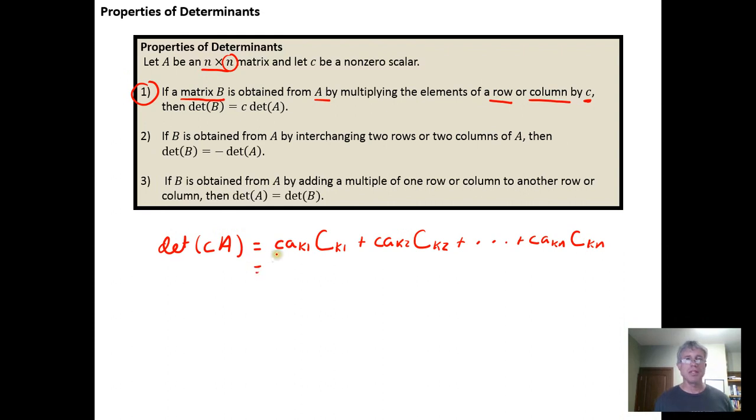And if you look at this, the scalar C shows up across the entire summation. So you could factor it out. And that would leave you with the element from A, row K column one, times the cofactor matrix for row K column one. Plus, and then you'd get the element from row K column two, times the cofactor matrix from row K column two.